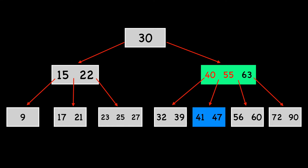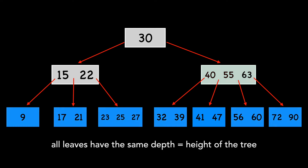Another property of B-trees is that all leaves are at the same depth, which is the height of the tree.